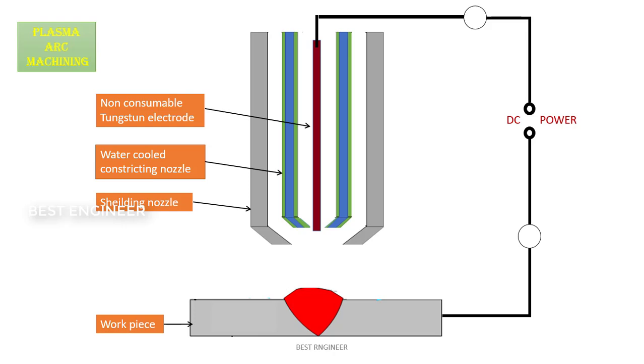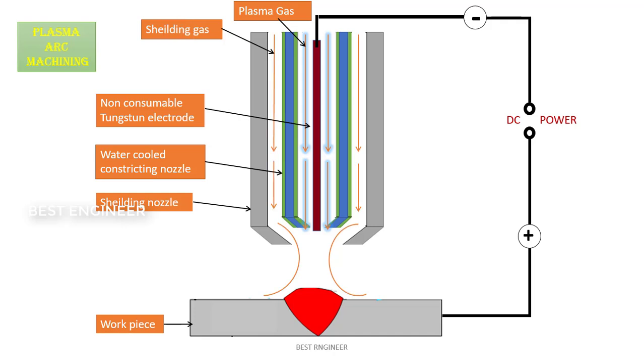DC power supply: in the DC power source, negative power supply is given to the electrode and positive power supply is given to the workpiece. Plasma gas is used to generate the plasma jet, and shielding gas. These are the important parts in plasma arc machining.